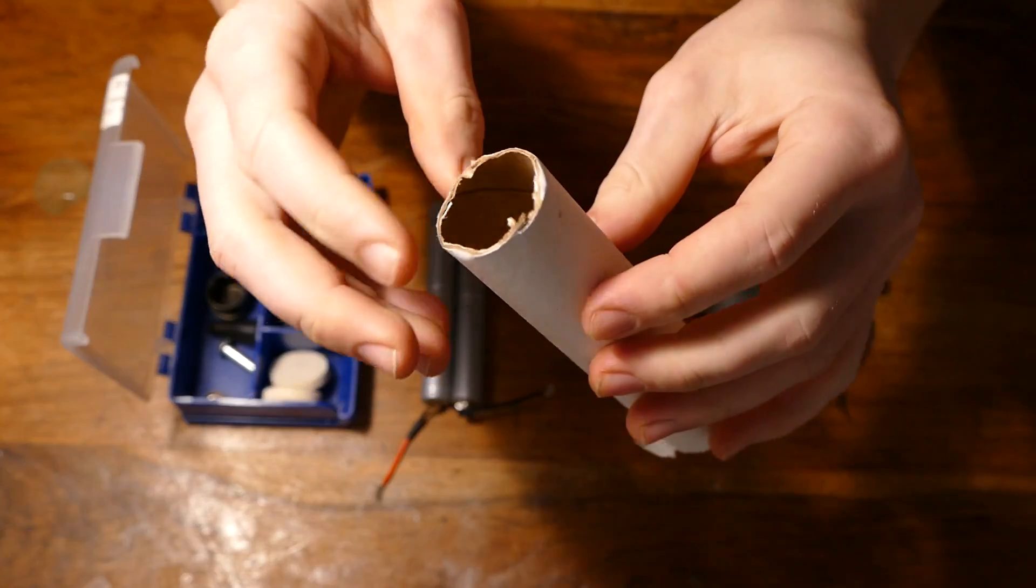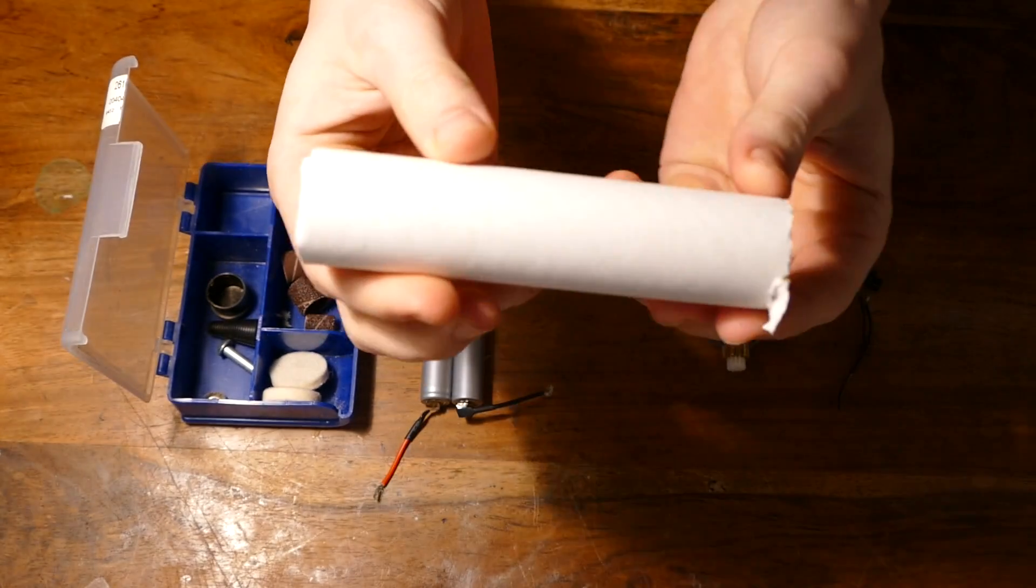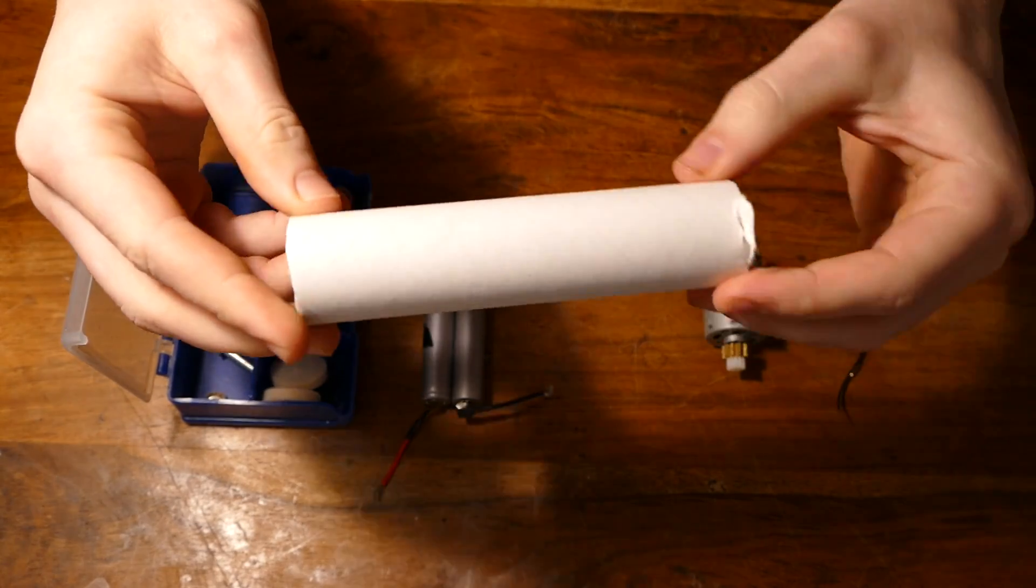Next, for housing, I'm using about 6 inches of an old gift wrapping tube. You can use PVC pipe if you want, but I'm trying to keep the cost down.